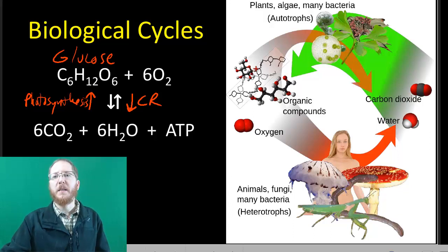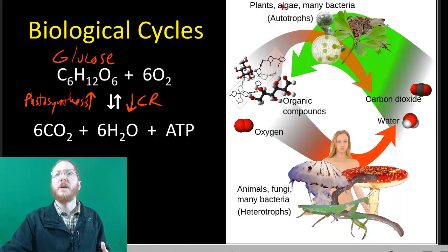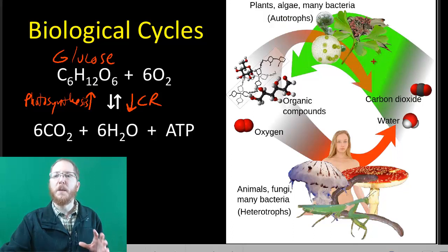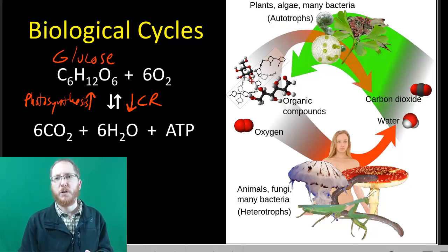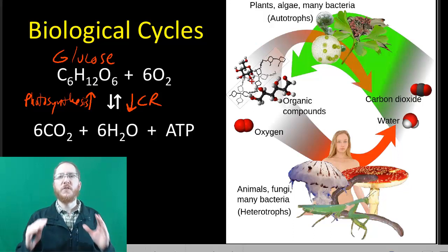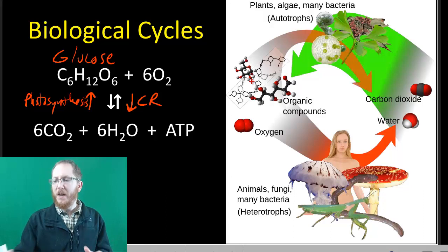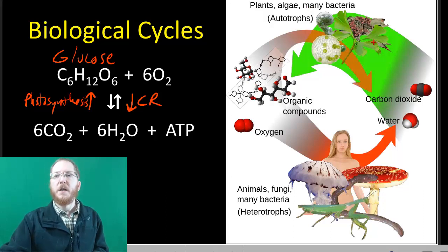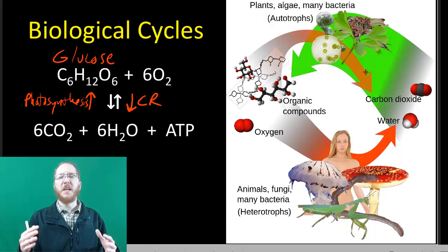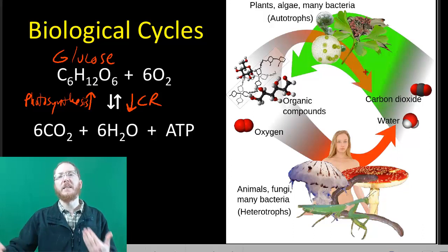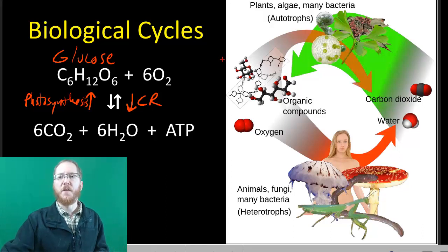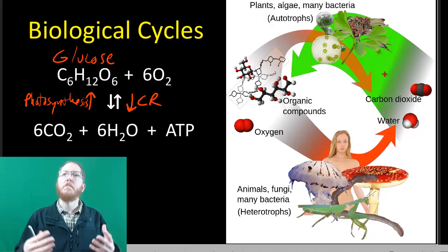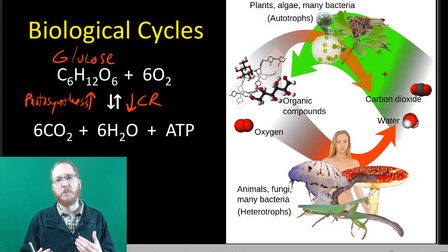I want to caution you: everybody does cellular respiration, including autotrophs — this is not something only animals, fungi, and heterotrophs do. The difference is that plants do far more photosynthesis than cellular respiration. You can think of it as a plant making 10 oxygens and using two — the other eight are waste. That's why we say plants release oxygen: they do so much more photosynthesis than cellular respiration. It's just a ratio.